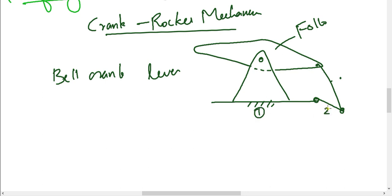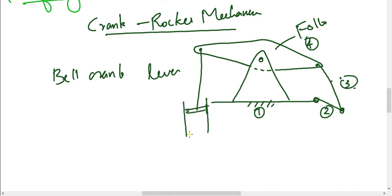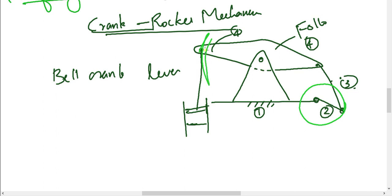The components are: Crank, Connecting Rod, and Follower. This is the original figure showing the links. This is an example of the Crank Rocker Mechanism where Link 2 undergoes complete rotation.